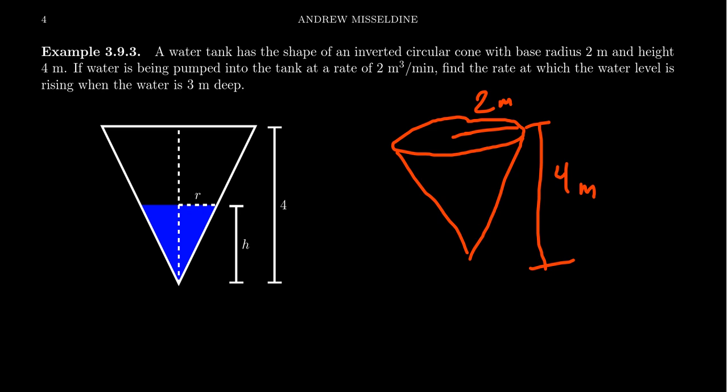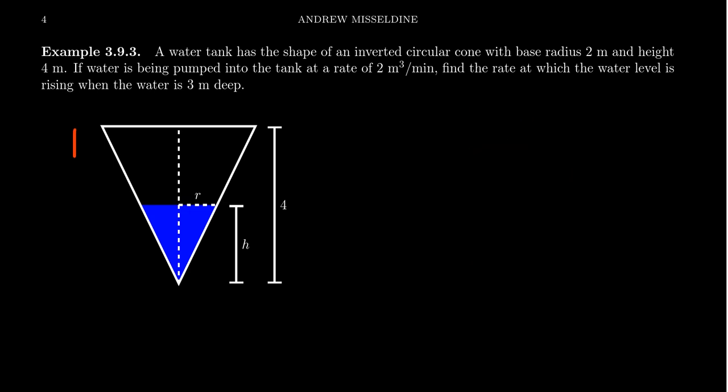Suppose water is being pumped into the tank at a rate of 2 cubic meters per minute. We need to find the rate at which the water level is rising when the water is exactly 3 meters deep. This is going to be an example of a related rates problem. Notice the units form a ratio of meters cubed per minute — a rate.